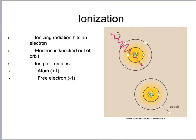An ion pair means two ions with charges: one net-positive atom and one net-negative electron. This matters because if the ionized atom is a carbon atom composing part of a patient's cells, we've created conditions where alterations can occur in an organic system — mutation, cancer, and genetic disorders can all result from this ionization process. That's why clinicians need to understand the physics.